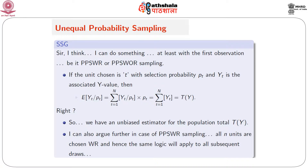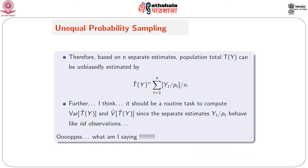In the case of PPSWR sampling, all n units are chosen with replacement, and hence the same logic will apply to all subsequent draws. Therefore, based on n separate estimates, the population total T of y can be unbiasedly estimated by: T-hat-y equals summation of yt divided by pt, whole divided by n. Further, it should be a routine task to compute the variance of T-hat-y and its estimate, since the separate estimates yt divided by pt behave like iid observations.